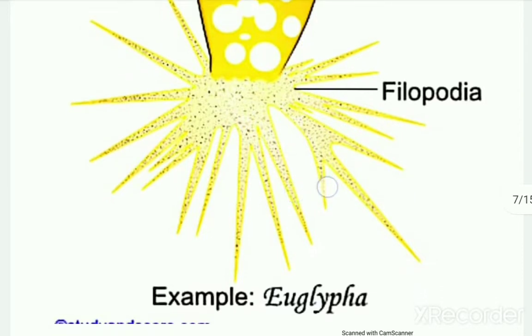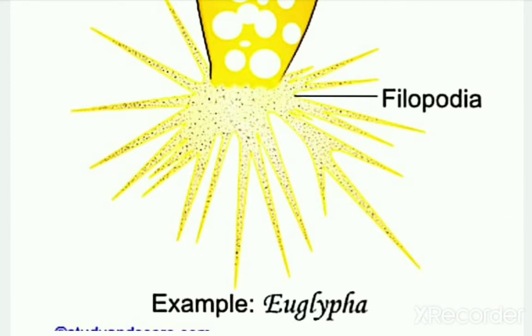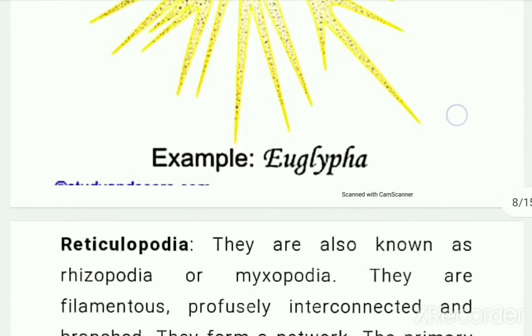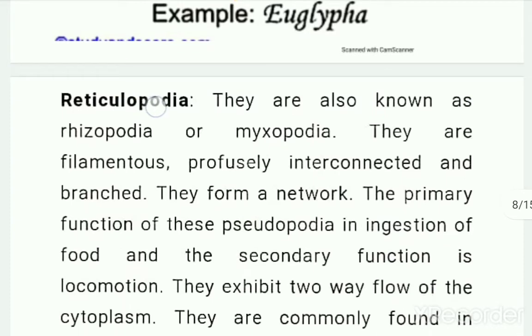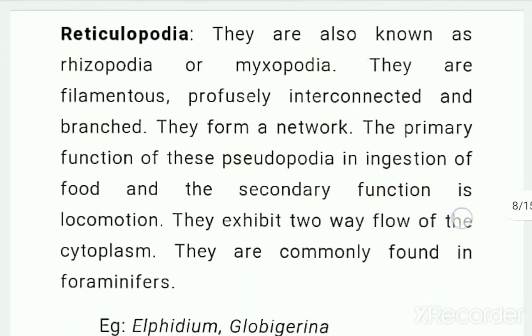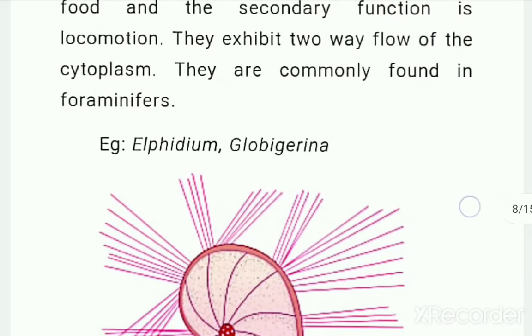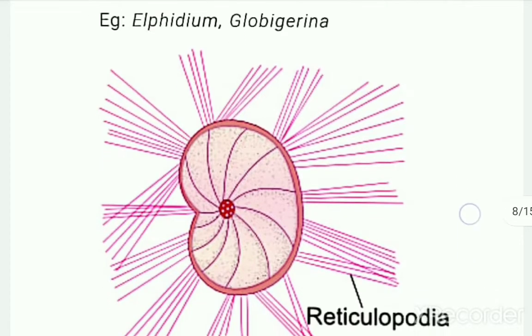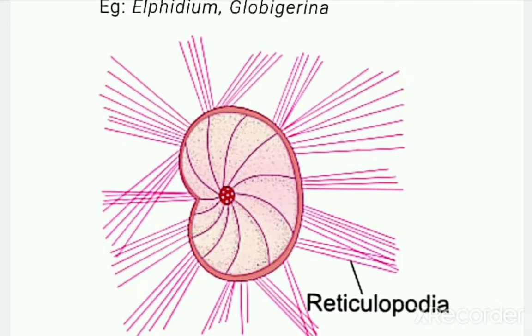Next are the reticulopodia, which are also called rhizopodia, which again consist of only ectoplasm. The characteristic feature is that pseudopodia undergo fusion and take a sort of network formation.